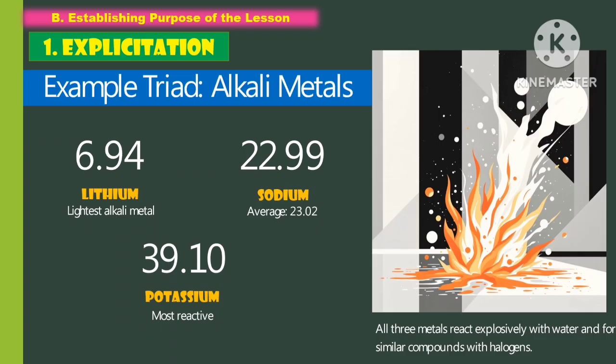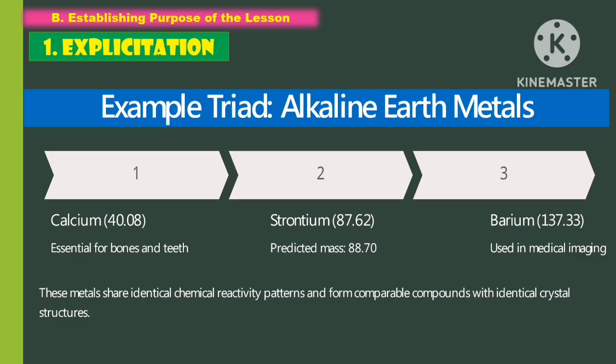The following are examples of triads. The first is the alkali metals: lithium, sodium, and potassium. All three metals react explosively with water and form similar compounds with halogens. Another example of a triad is the alkaline earth metals: calcium, strontium, and barium. These metals share identical chemical reactivity patterns and form comparable compounds with identical crystal structures.